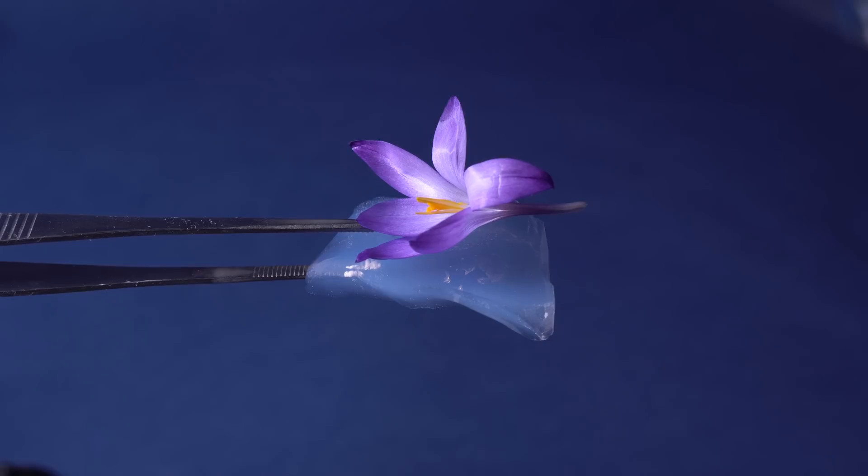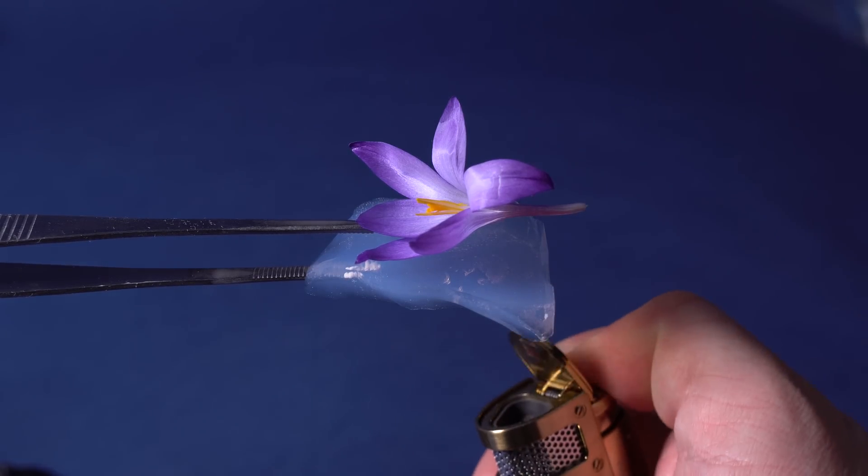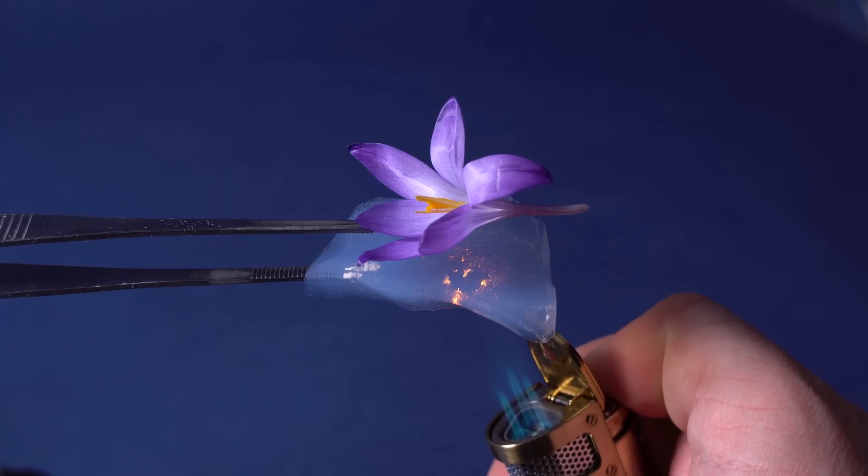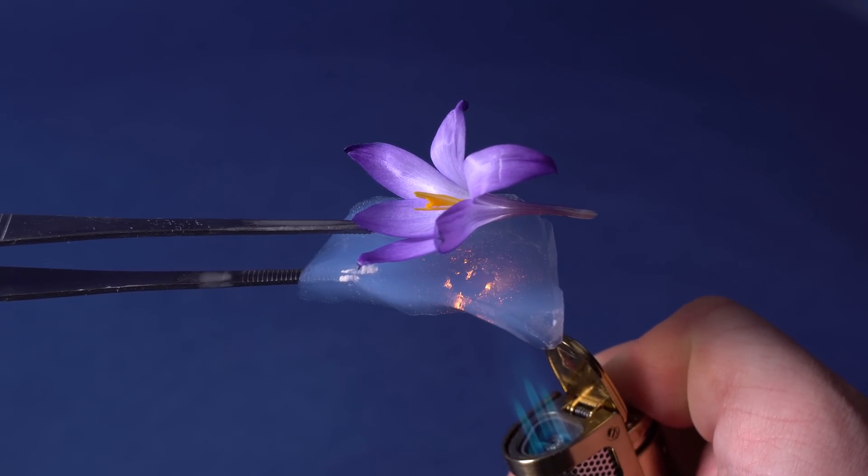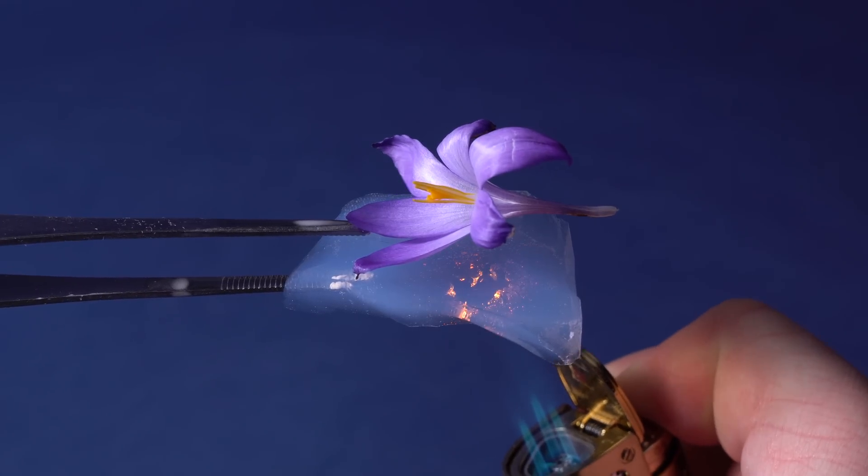I decided to conduct a classical experiment with it. I put a small flower on a piece of aerogel and started heating up the aerogel with a powerful blue torch. The flower withers on the edges, but it practically doesn't change in the middle.